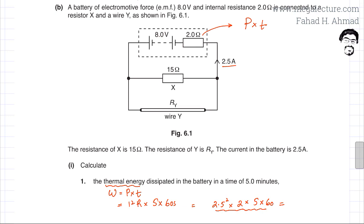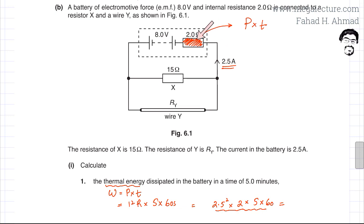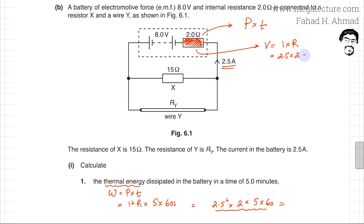The battery is providing 8 volts, but there is an internal resistance of 2 ohms which causes a voltage drop. Using V = IR, the voltage across the internal resistance is 2.5 × 2 = 5 volts.